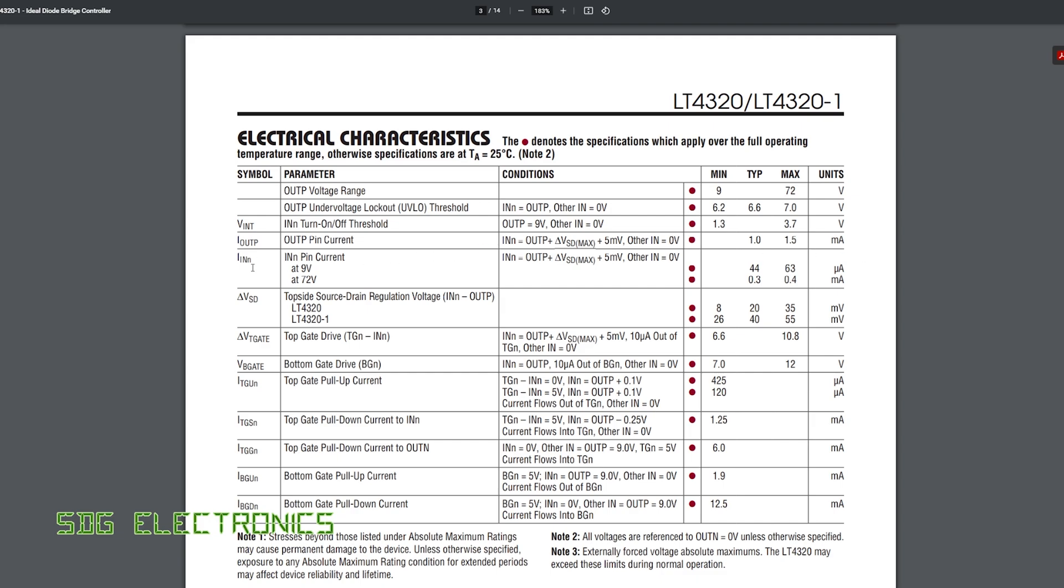And here are the numbers that we're interested in. So the input current at 9 volts is about 50 microamps or so. At 72 volts, which is the maximum I think for this chip, we're probably going to see somewhere in the region of 350 microamps. So we are going to see some losses, but that is pretty small, nothing really too much to worry about.